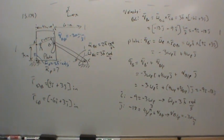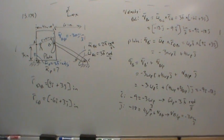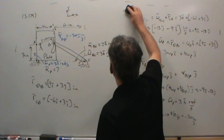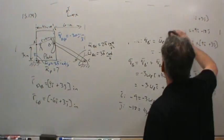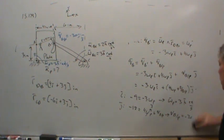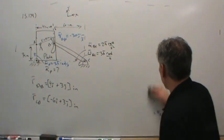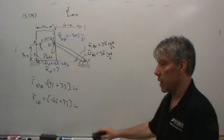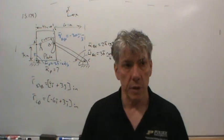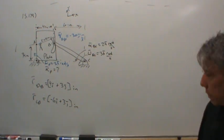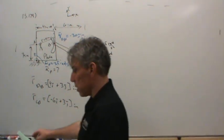Why did we perform the velocity analysis when all they wanted was acceleration? Because we had to. The velocity analysis feeds into the acceleration analysis — without knowing the angular velocity, we have no idea how large the normal acceleration is. So now let's continue with the acceleration analysis.